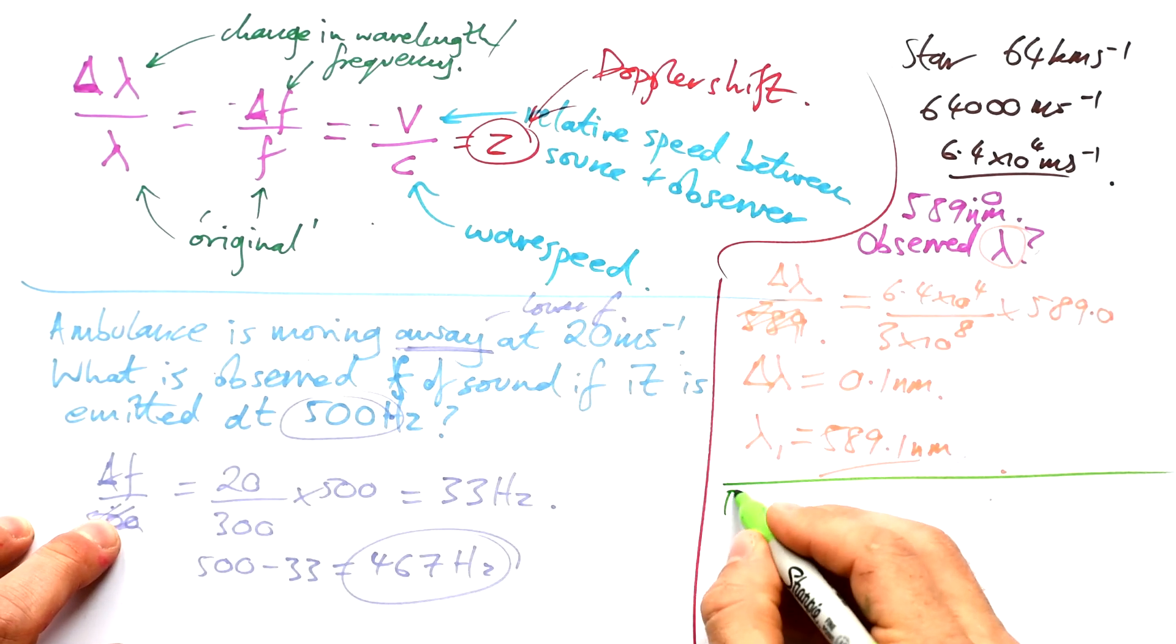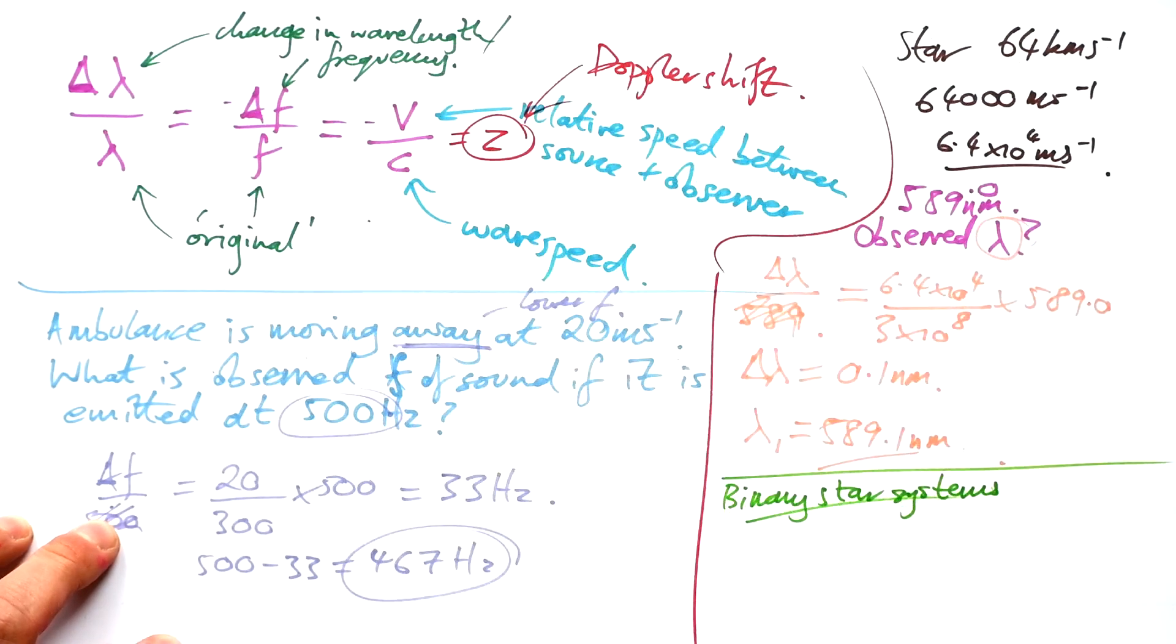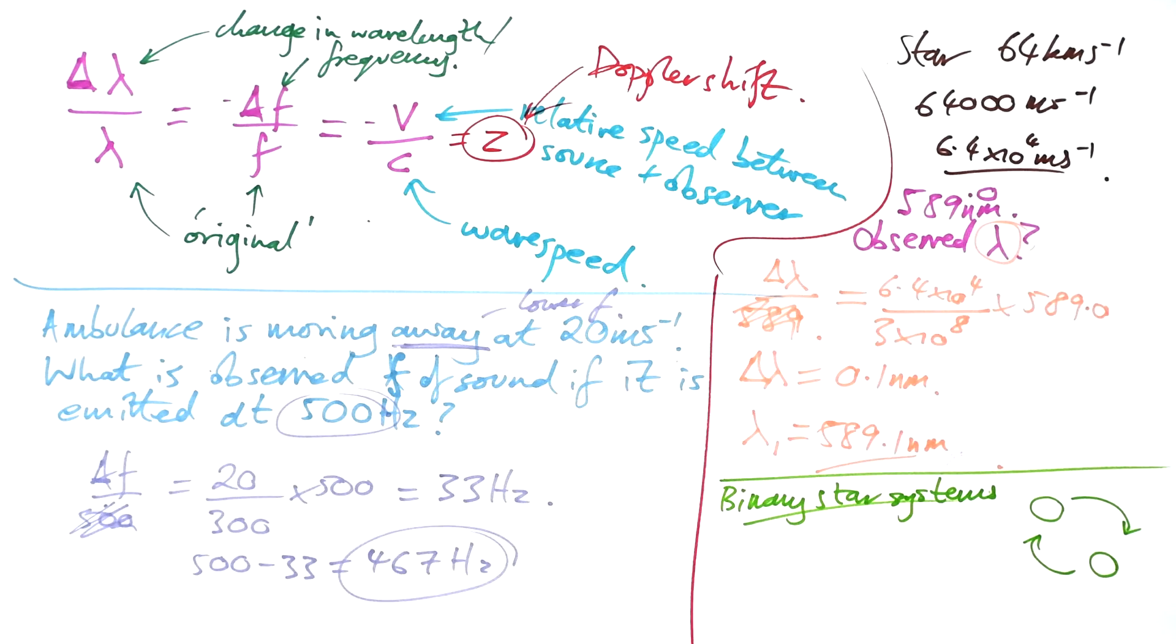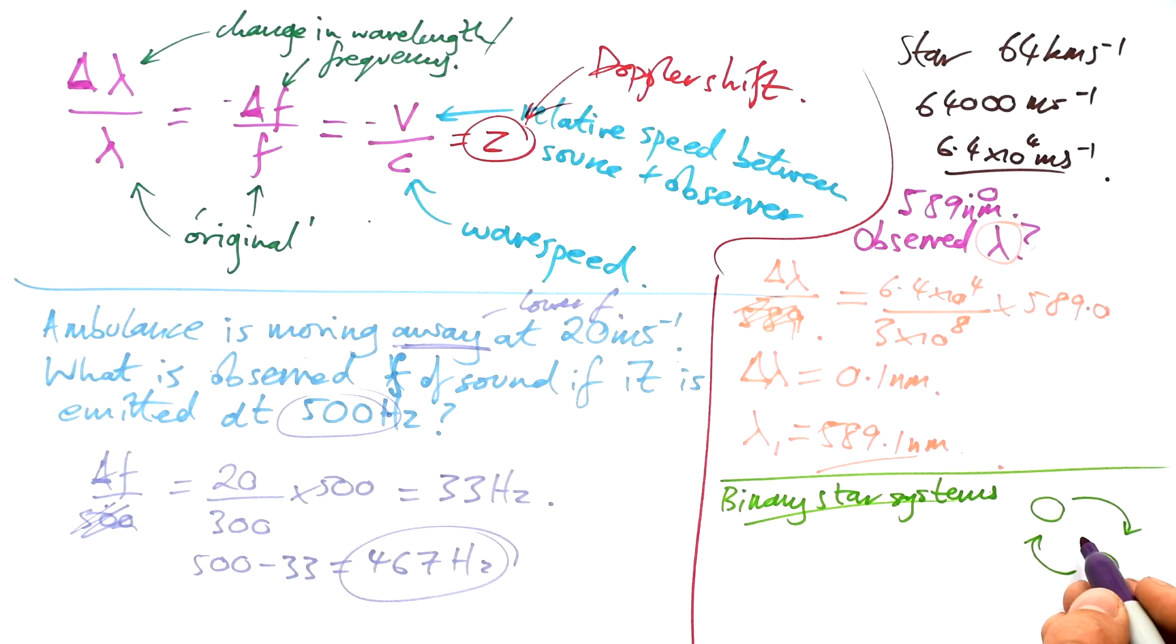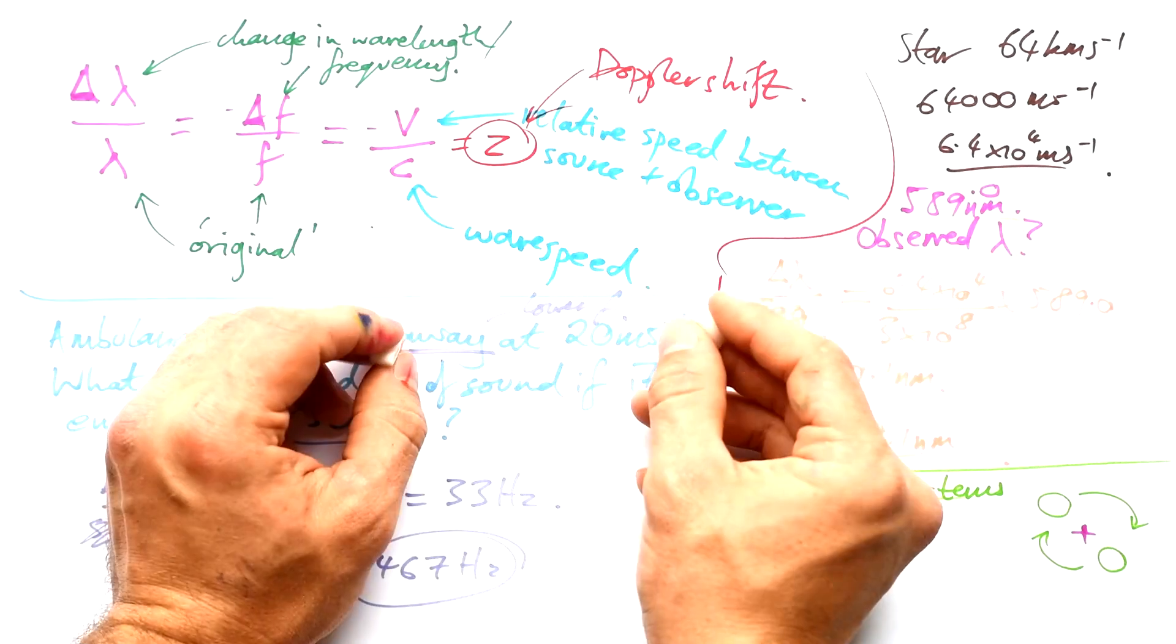Last thing that's worth talking about very quickly are binary star systems. You can actually get two stars that are trying to orbit around each other. Well technically they are orbiting around each other. If we pretend that one of the stars is staying still then we just see the other star go around it but the problem is that that's happening to both of them so instead of orbiting around each other as it were they orbit around a common center.